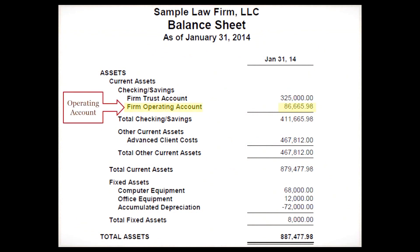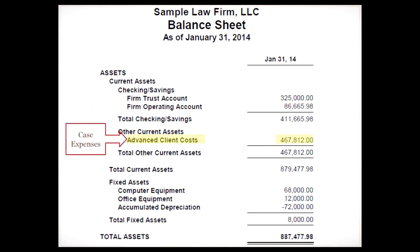Back to the balance sheet — next we have the firm's operating account, which is the law firm's checking account. We also see advanced client costs listed under other current assets; these are case expenses that the law firm has advanced on behalf of its clients.